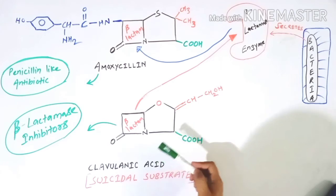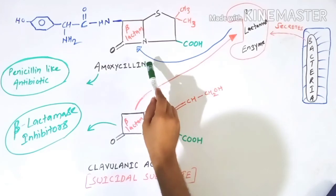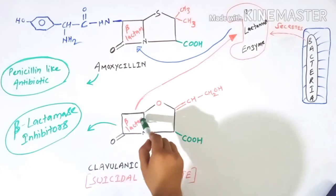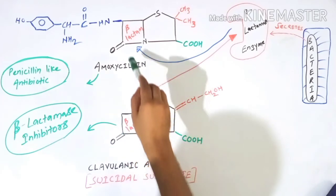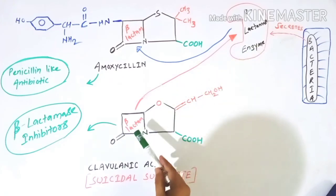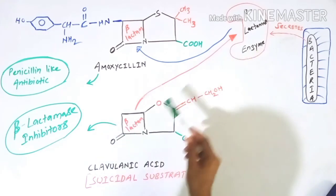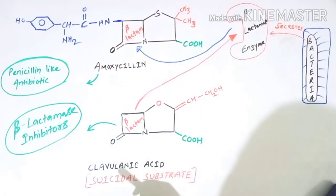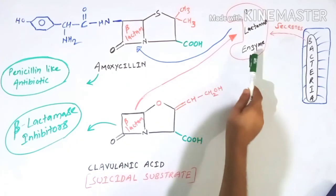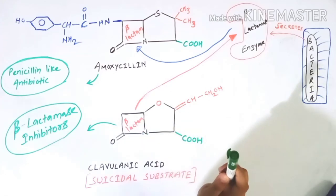In order to preserve and safeguard amoxicillin, we have added clavulanic acid. Clavulanic acid also has a beta-lactam ring in its structure, just as amoxicillin does. The beta-lactamase enzyme falsely attacks the clavulanic acid beta-lactam ring, and as the enzyme attacks, clavulanic acid inactivates it. All the enzyme secreted by the bacteria gets inactivated upon interacting with clavulanic acid.